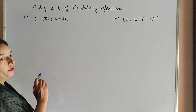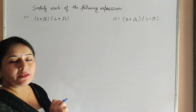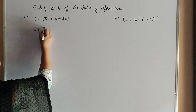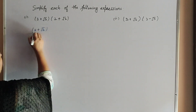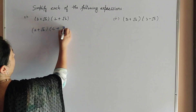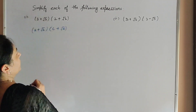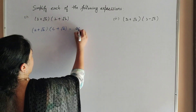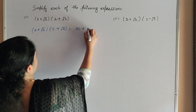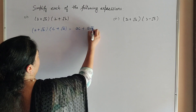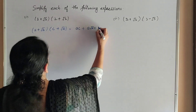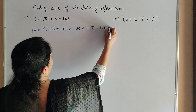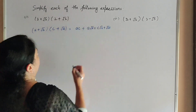To simplify this expression we use the identity: (a + √b) into (c + √d) equals ac + a√d + c√b + √(bd).